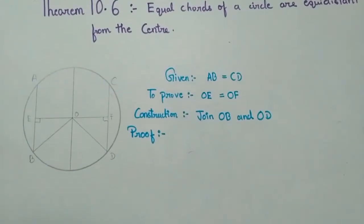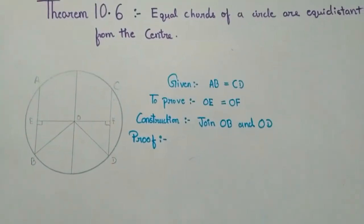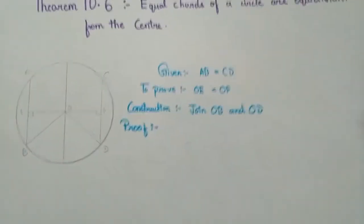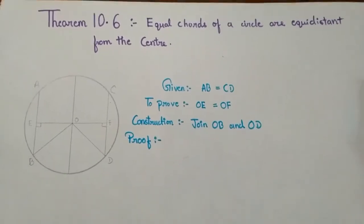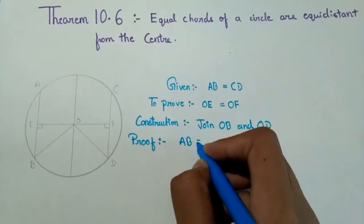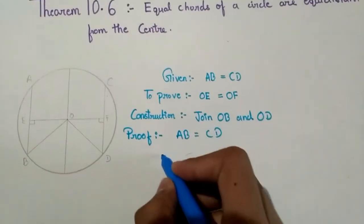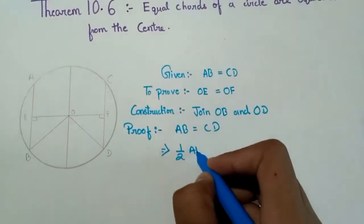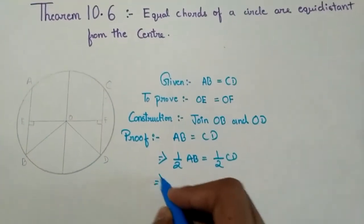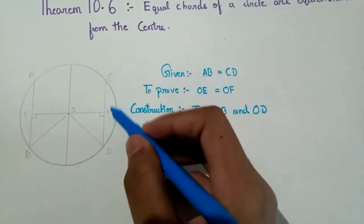Given: AB is equal to CD. To prove: OE is equal to OF. Construction: join OB and OD as radii. Now in the proof, AB is equal to CD (given), so half of AB is equal to half of CD, which means EB is equal to FD.